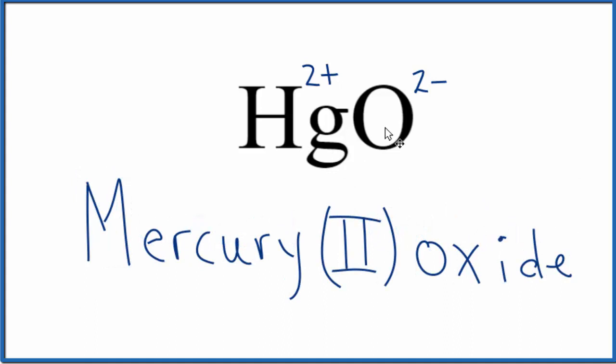And that makes the name for HgO, mercury two oxide. If you are given the name and asked to write the formula for mercury two oxide, you'd know that mercury is going to be two plus, the oxygen's two minus. So these will balance out HgO.